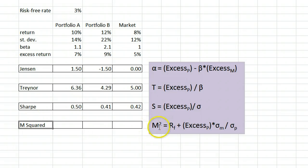The M-squared measure uses this formula here. We take the risk-free rate RF, and add the excess return multiplied by the market's standard deviation divided by the portfolio's standard deviation.